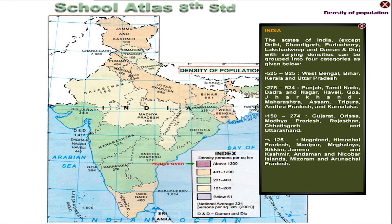The second category, with density 275 to 524, includes Punjab, Tamil Nadu, Dadra and Nagar Haveli, Goa, Jharkhand, Maharashtra, Assam, Tripura, Andhra Pradesh, and Karnataka.